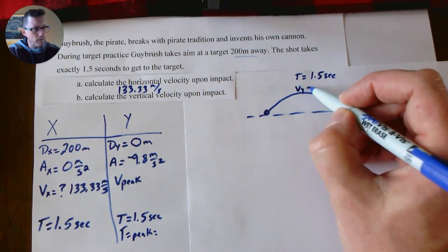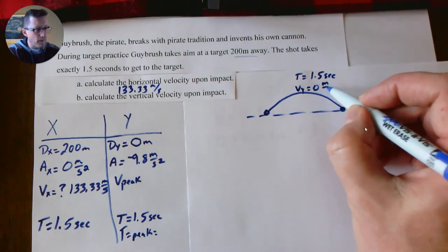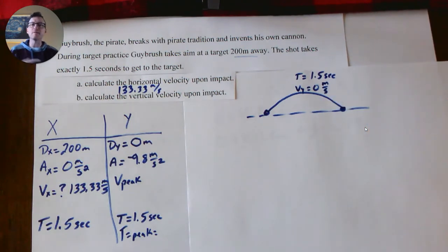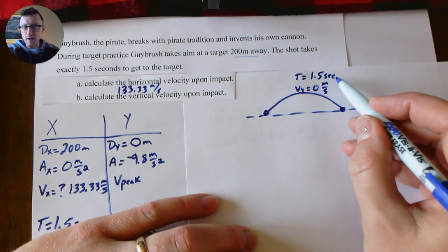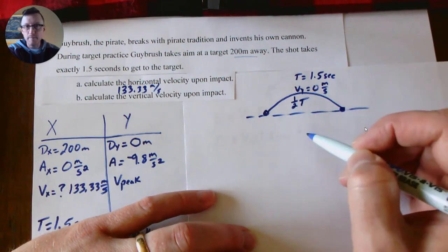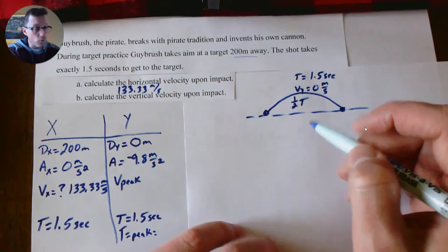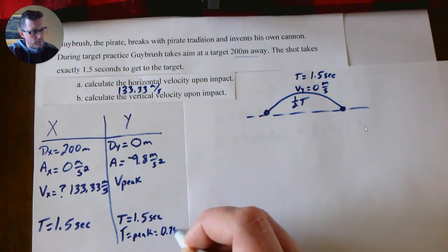Well, we know the y velocity is zero because that's the point in time in the flight where it stops going up and then immediately starts falling back down, which means that for a moment, for an instant, up and down speed must be zero. We also know that if the total time is 1.5 seconds, the peak is always half of the total time. So what's one half of 1.5? Time at the peak then must be 0.75 seconds.